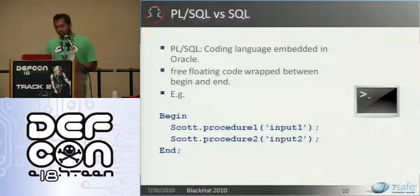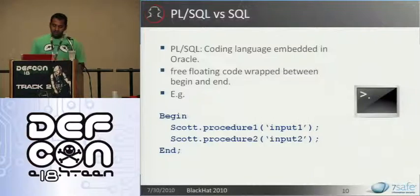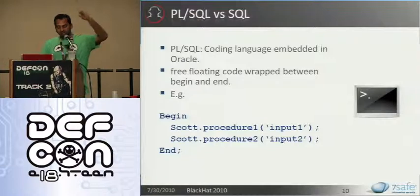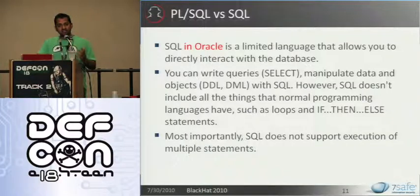That was hacking Oracle from networks, which has been very well documented. Now when it comes to exploiting SQL injections against Oracle database, it's important to understand there are two classes of this vulnerability, because Oracle has two coding languages: PLSQL and SQL. PLSQL is a powerful coding language embedded in Oracle — you can consider it as free-floating code wrapped between begin and end, with n number of statements. However, SQL in Oracle is quite limited and by design does not allow execution of multiple statements. That is one thing which differentiates exploitation of SQL injections in Oracle versus MS SQL.